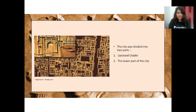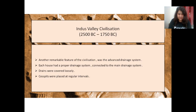The city was divided into two parts: an upraised citadel and a lower town. The citadel served administrative and ritualistic purposes on important occasions. The lower part of the city contained normal bazaars and craftsmen. There were three main types of buildings: dwelling houses for common people, public buildings for administration, and public baths like the Great Bath at Mohenjo-daro.